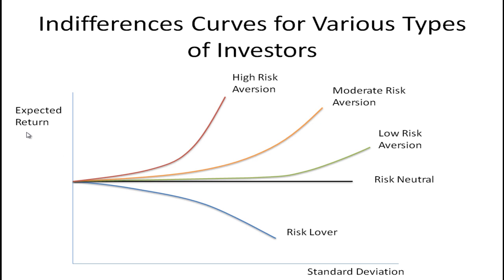Standard deviation is our risk, and expected return is our return. Expected return is good, but standard deviation is something we generally don't like. The risk-neutral individual has a horizontal line for their indifference curve. The level of satisfaction they get doesn't change with the level of risk they face — as long as they're getting the same expected return, they don't care what the standard deviation is. They're indifferent to risk. To get them a higher level of satisfaction, you'd need a higher expected return.